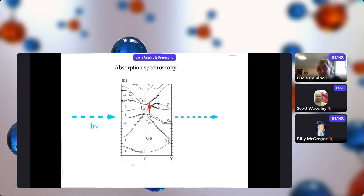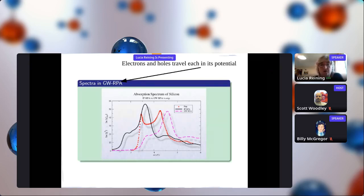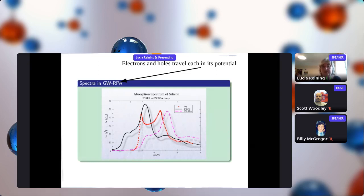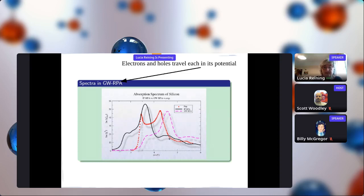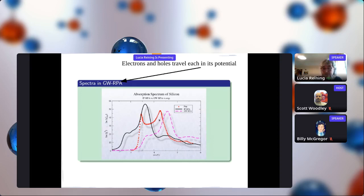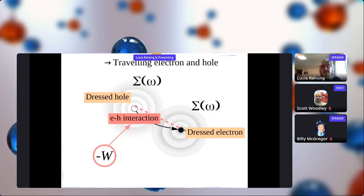What about absorption? Suppose we do GW calculations - we have very good bands - and we take an electron from one band and put it in another. Do we get the correct absorption spectrum? The response is no, because in this way electrons and holes each travel in their best potential but not together. This is called the random phase approximation. For silicon, the experiment is shown in red, and the GW curve in pink shows a large shift to higher energies with respect to experiment and incorrect line shape. This is because we have neglected the interaction of the electron and the hole.